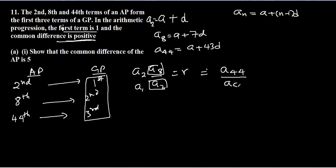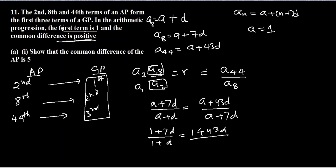So let's write the values. a8 was a plus 7D divided by a2 which was a plus D, equals the 44th term a plus 43D divided by a plus 7D. Now since they have already given us that a is 1, the first term of the AP is 1, so we will substitute 1 and do the cross multiplication. 1 plus 7D over 1 plus D equals 1 plus 43D over 1 plus 7D.